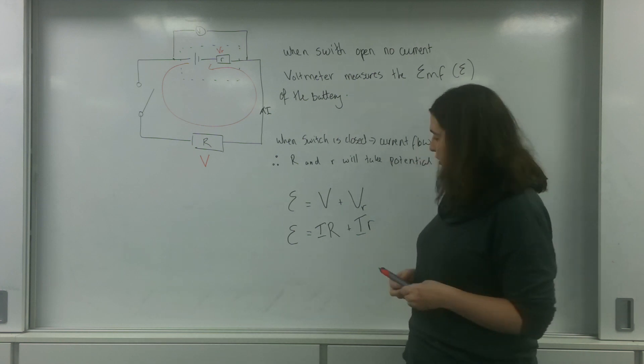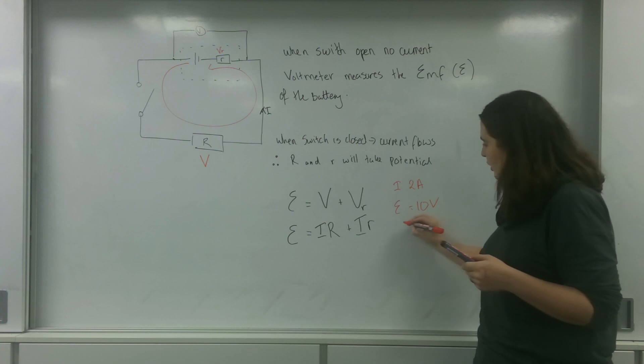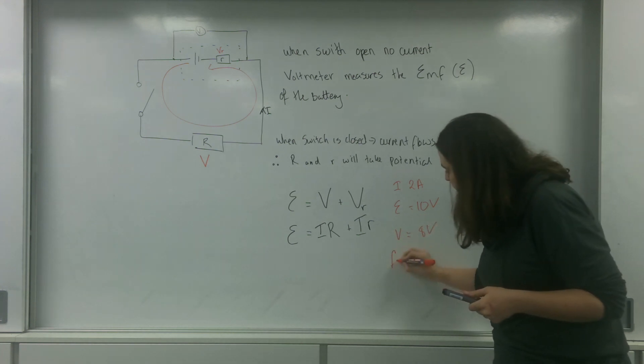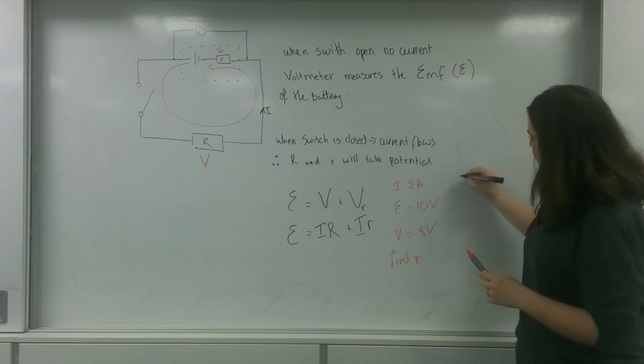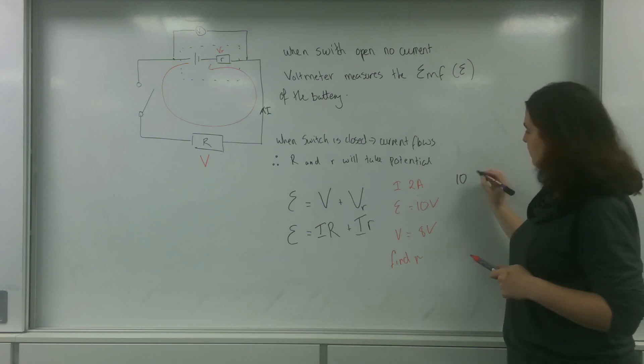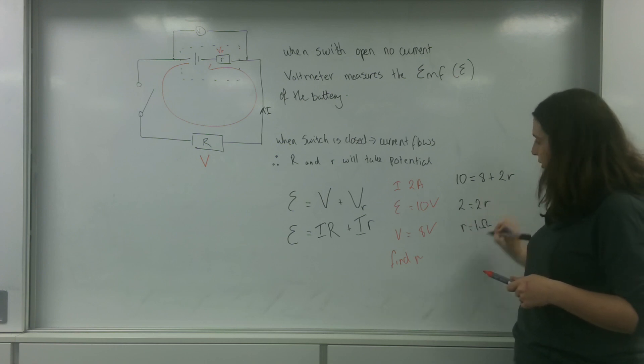So I can give you an example of this. Let's say the current was 2 amps, my EMF is 10 volts, the potential to my circuit was 8 volts. Find little r. So I know 10 goes into the circuit: 8 plus I little r, so 2 little r here. 2 equals 2 little r, r equals 1 ohm.